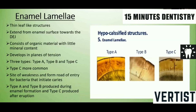Next is enamel lamellae. They are leaf-like structures which run from the enamel surface towards the dentino-enamel junction, and they develop in planes of tension. There are three types: Type A, Type B, and Type C. Type A is filled with poorly calcified rods; Type B is filled with degenerated cells; and Type C consists of organic matter derived from saliva and is the most common type. Type A and B are produced during enamel formation; Type C is produced after eruption. Types A and B reach up to the dentin, while Type C crosses the dentino-enamel junction. Enamel lamellae are a site of weakness and form a route of entry for bacteria, which initiates caries.